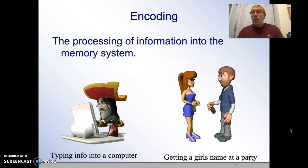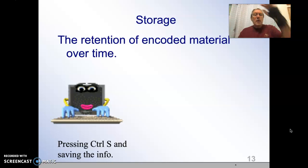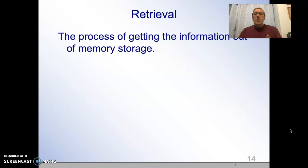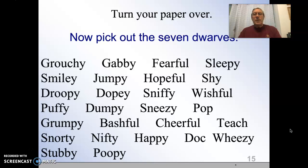There are three memory functions: encoding, storage, and retrieval. Encoding is the processing of information — similar to typing something into a computer. Storage is like hitting Ctrl+S and putting information into a file, similar to repeating information when you first hear it. Retrieval is simply getting that information back out — like looking for a document and pulling it up so you can do something with it.